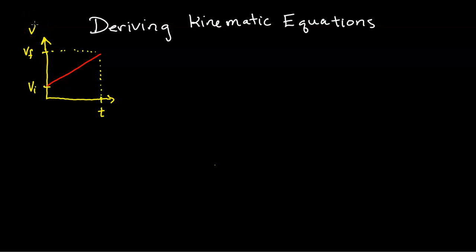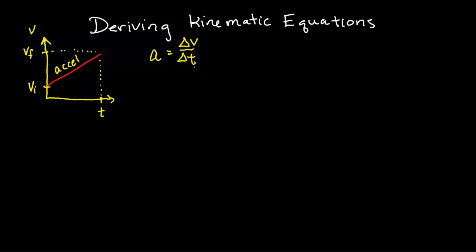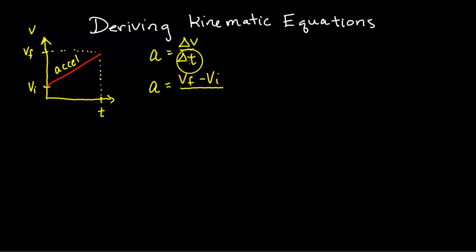On this velocity versus time graph we have a straight line. The slope of this line represents the acceleration, and using the slope equation we can write that acceleration is equal to the change in velocity over the change in time — slope is the change in y divided by the change in x. Expanding that, we get v_final minus v_initial divided by delta t, where delta t is t_final minus t_initial, and if t_initial is zero we just write t.